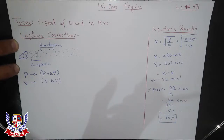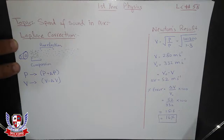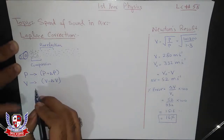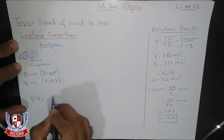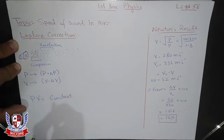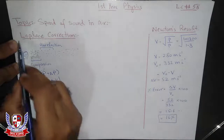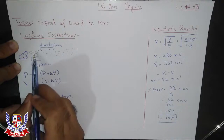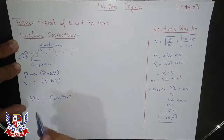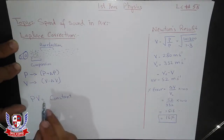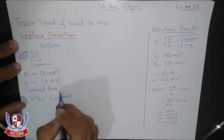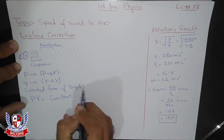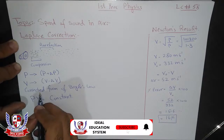The gas is compressed such that the temperature actually increases, so the assumption of constant temperature was incorrect. Laplace corrected this: he changed the statement to an adiabatic process rather than isothermal, introducing gamma into Boyle's Law, giving PV^γ = constant.